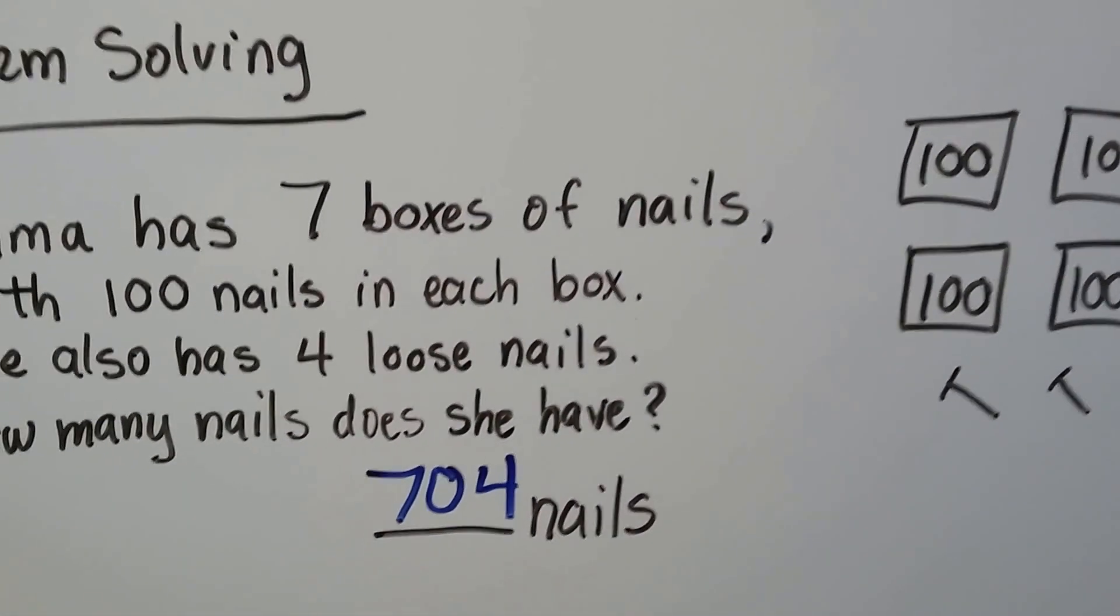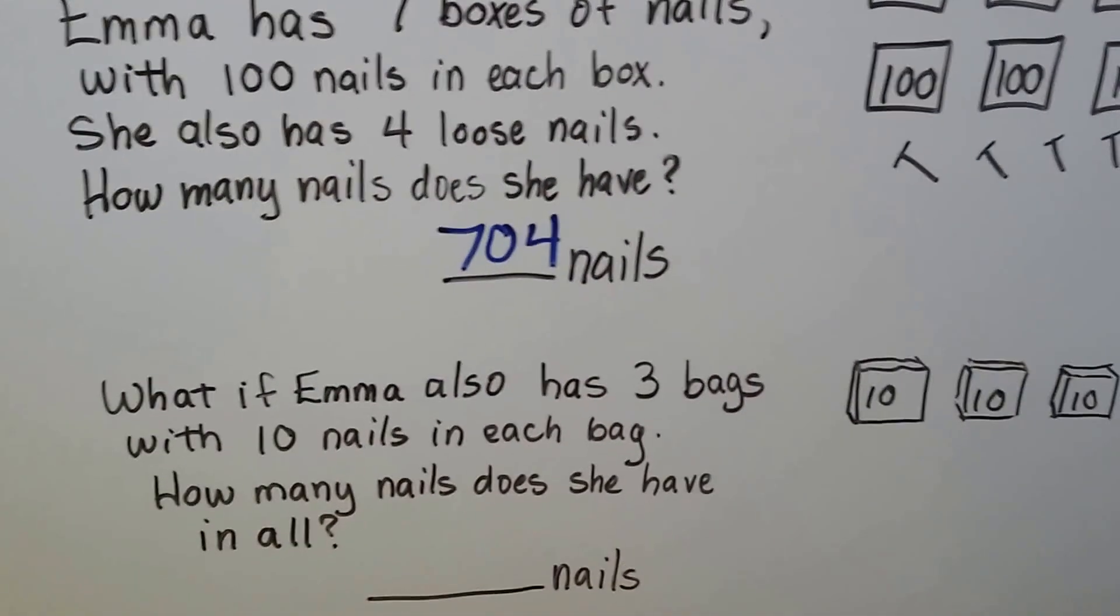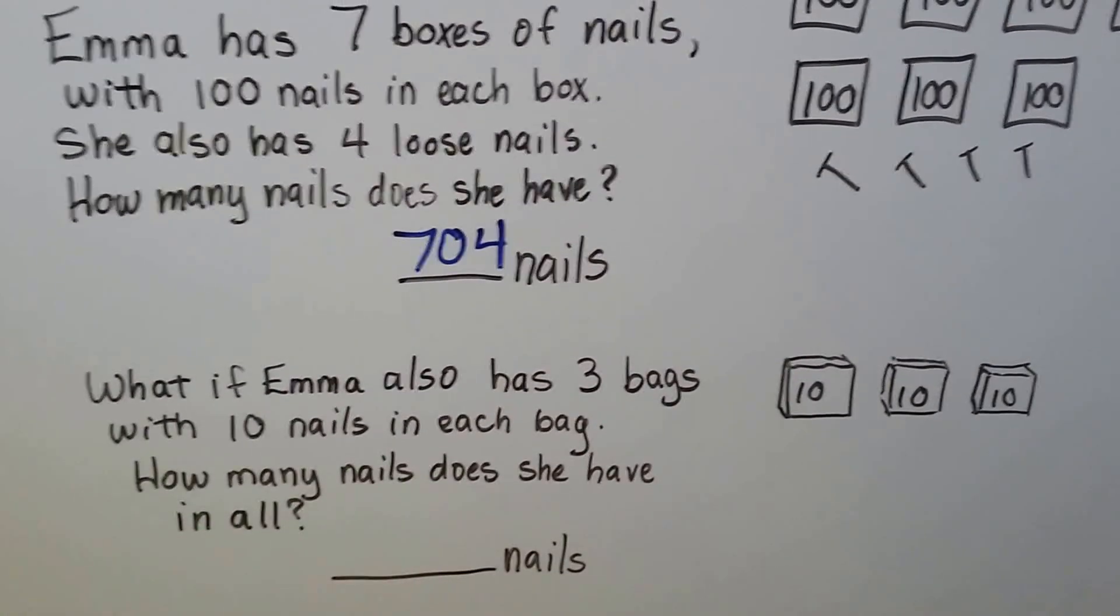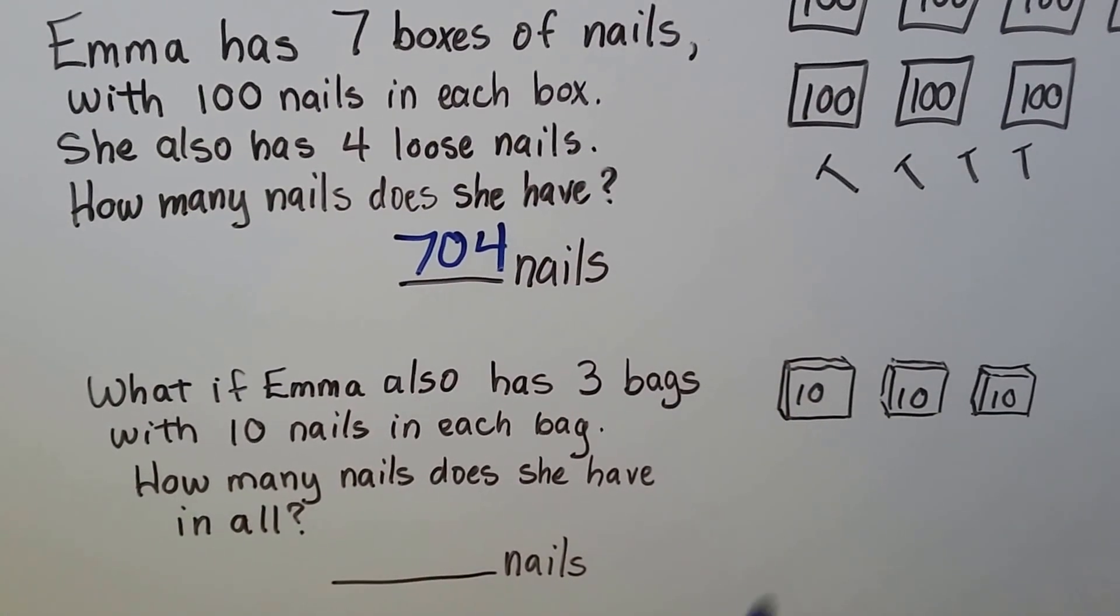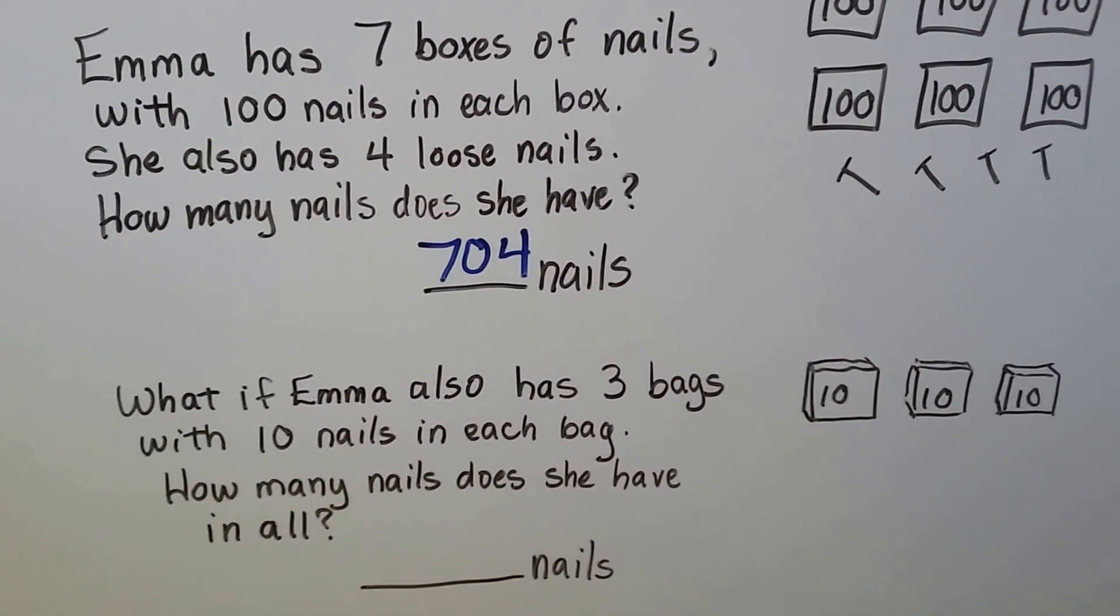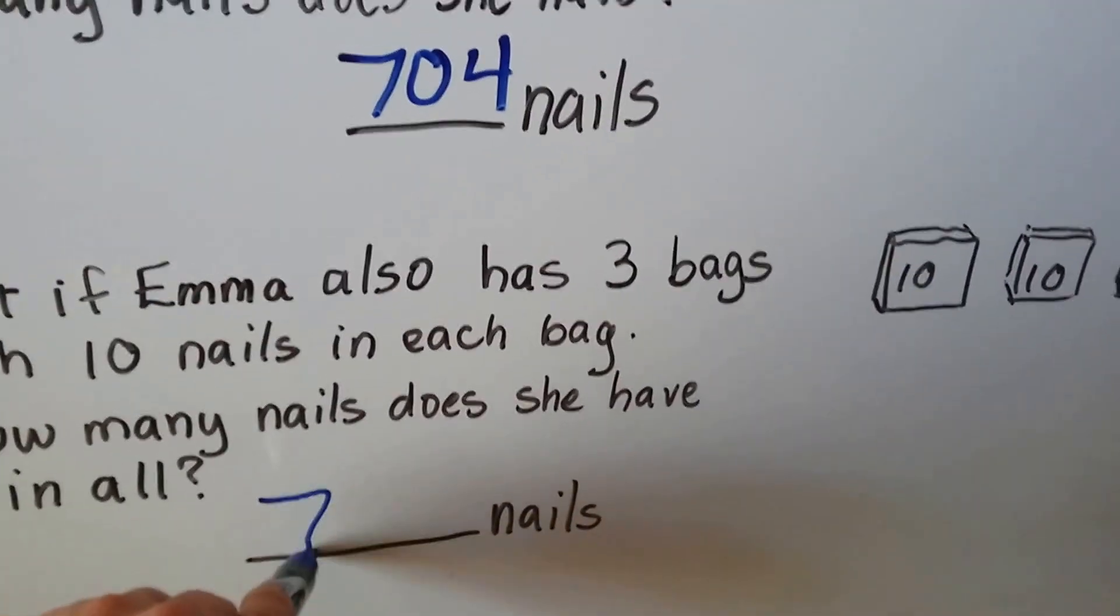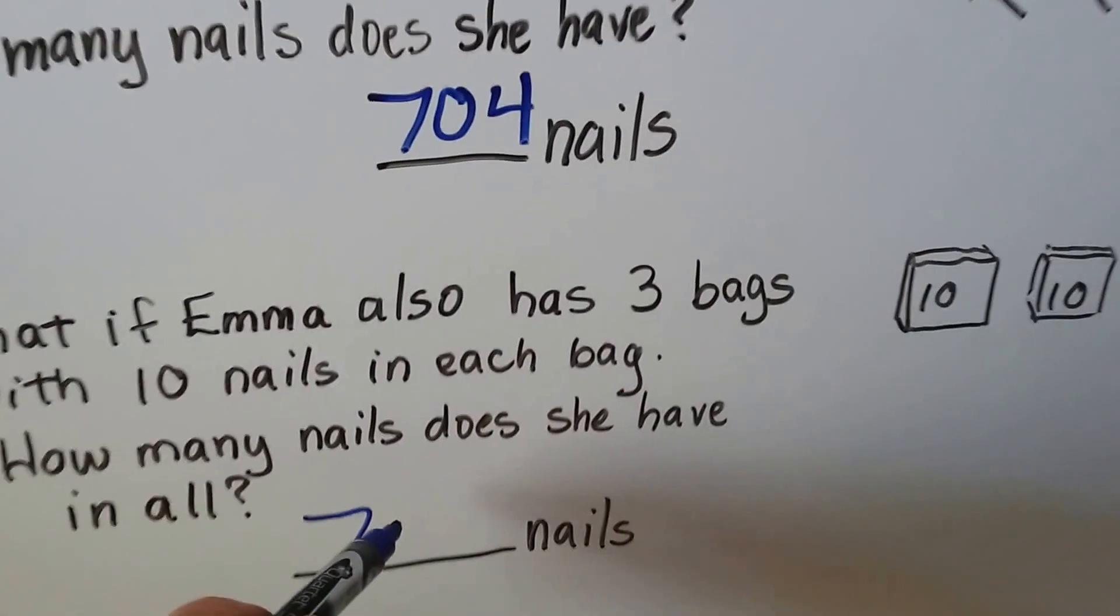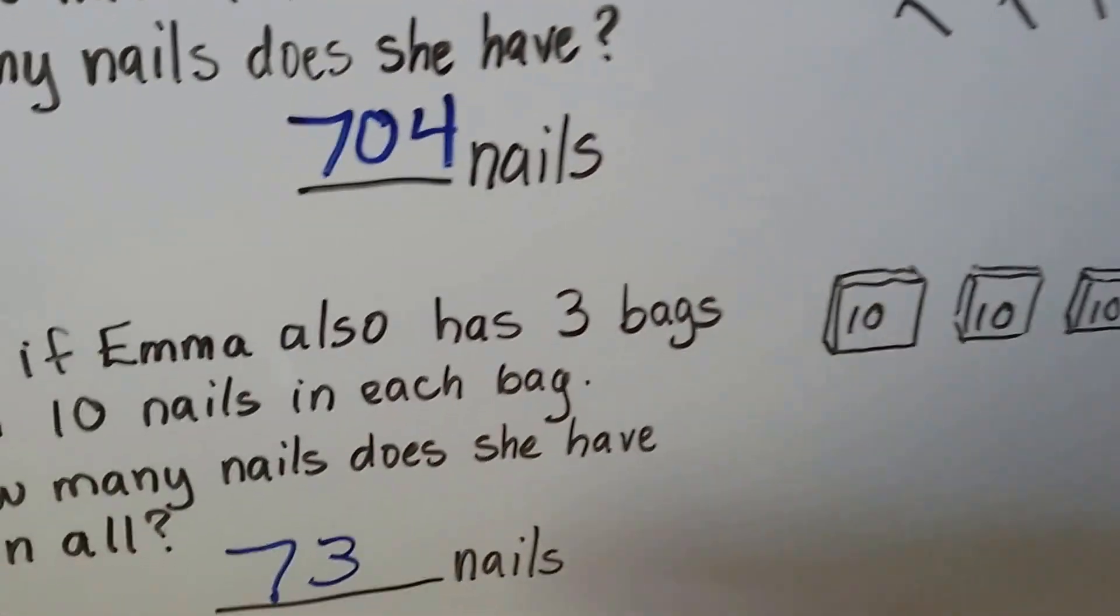Okay, now what if Emma also has three bags with 10 nails in each bag? Now how many nails does she have in all? So we have 10, 20, 30. So we need to add three tens to this number. It's not going to change the hundreds, is it? So she still has a seven in the hundreds place, but now she had no tens before, now she has three tens, and she still has the four loose ones. Now she has 734 nails.